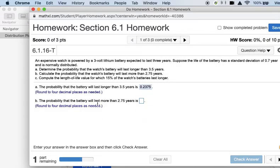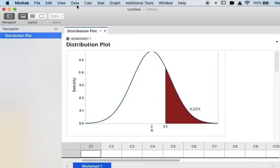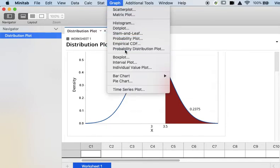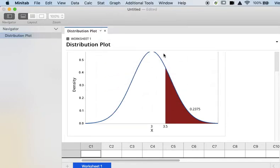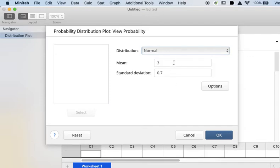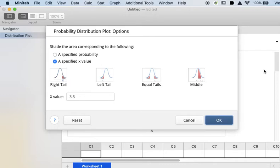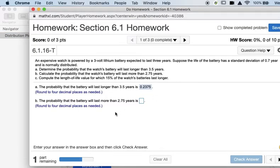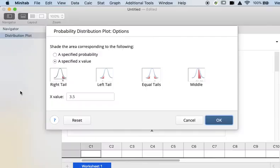For Part B, now I want to know the probability that the battery will last more than 2.75 years. So my mean and standard deviation are the same and they will still be in Minitab. What's changing is my X value. I do still want more or longer than the number of years, but now my X value is 2.75.